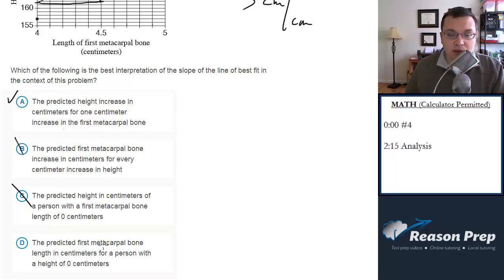The predicted first metacarpal bone length in centimeters for a person with a height of zero centimeters. That would be the x-intercept, which is not even shown here, but not relevant to the slope.